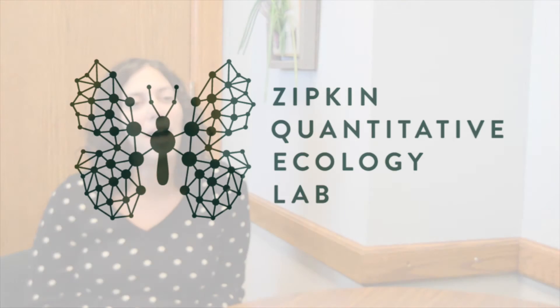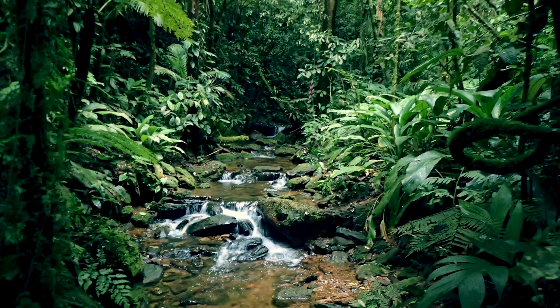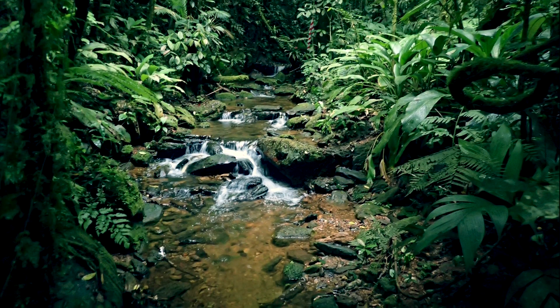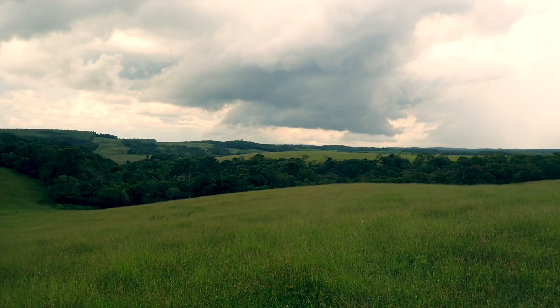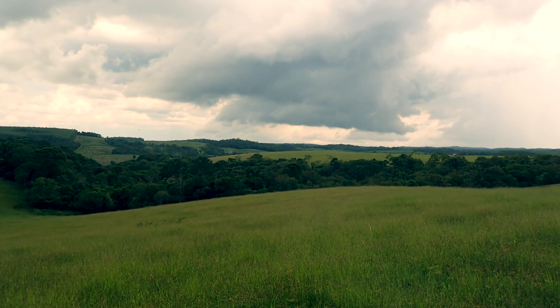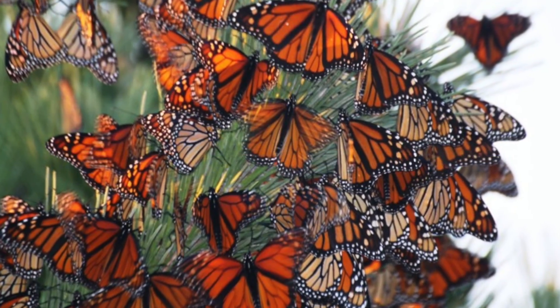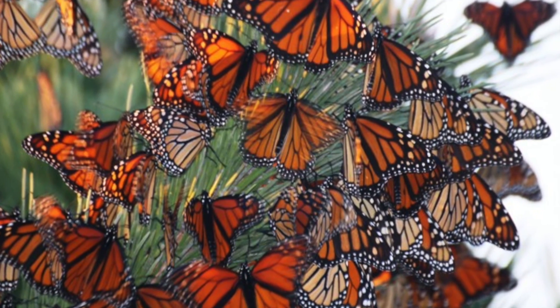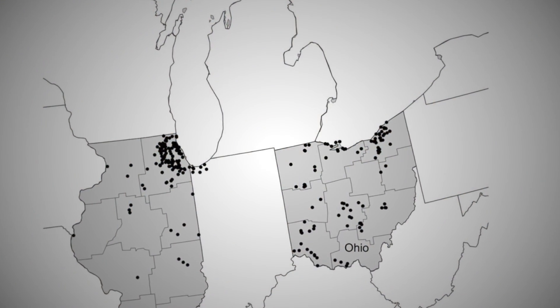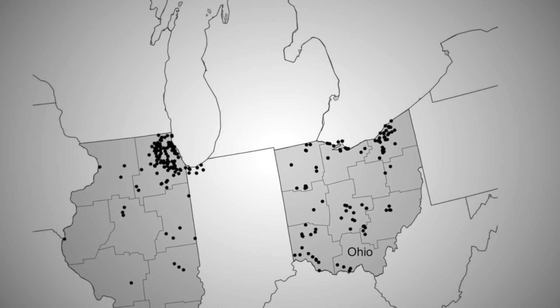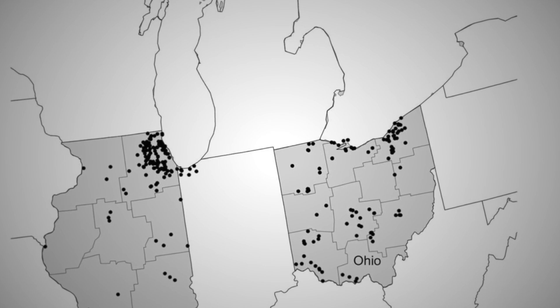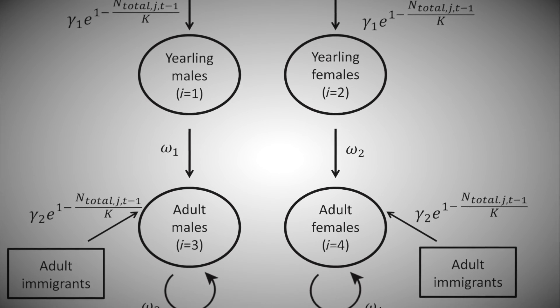I'm Elise. I'm the PI in the lab and our lab develops mathematical and statistical models to study the distribution and abundance of species. We're interested in questions like how does the environment affect the coexistence of species, or how does climate change lead to changes in species distributions. Generally we answer these sorts of questions by using large spatial and temporal data sets and developing statistical models.